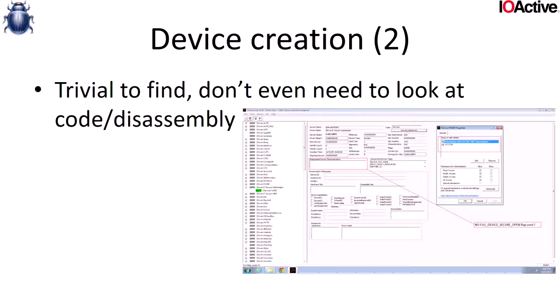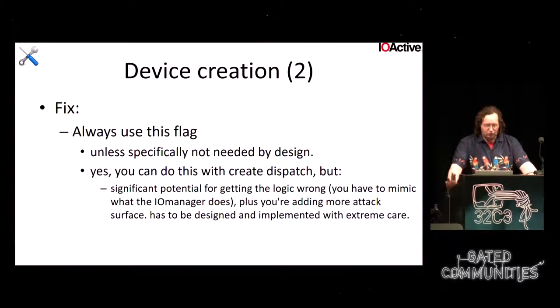This bug is incredibly easy to find. There's a tool called Device Tree that enumerates all your devices. You click on it and can see the ACLs and whether the FILE_DEVICE_SECURE_OPEN flag is set. If the flag isn't set and the ACLs say admin-only, you most likely have a security bug right there — it's one click away. The fix: always set this flag unless you are very specifically building a file system driver.